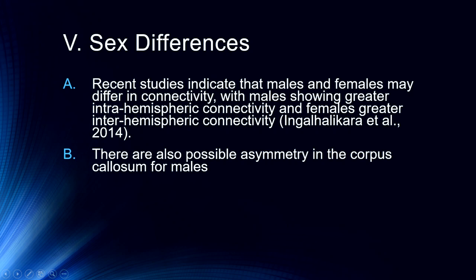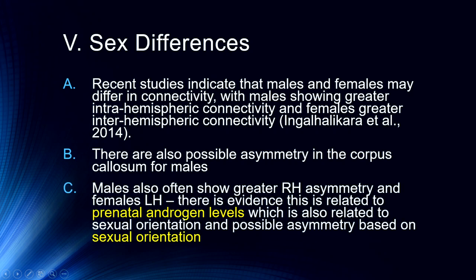There are also possible asymmetries in the corpus callosum for males — there does seem to be a greater connectivity to the right hemisphere than the left. Males also tend to show greater right hemisphere asymmetry; that is, the right hemisphere tends to be a little bit larger than the left. Women tend to oftentimes have larger left hemispheres than right.